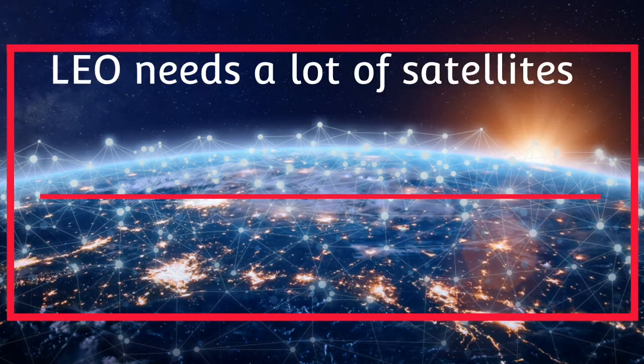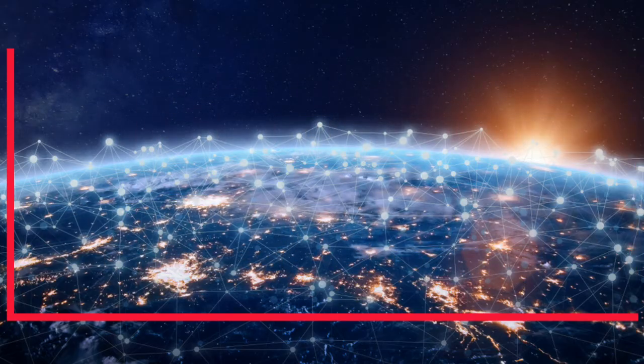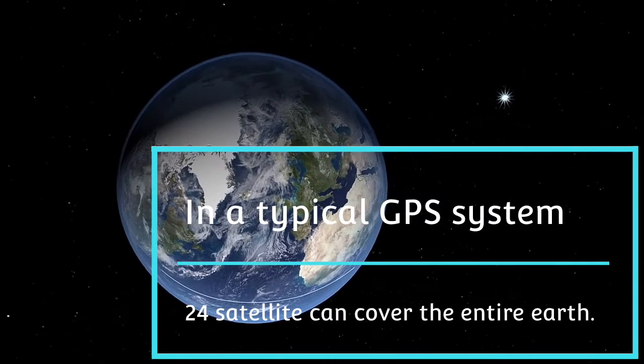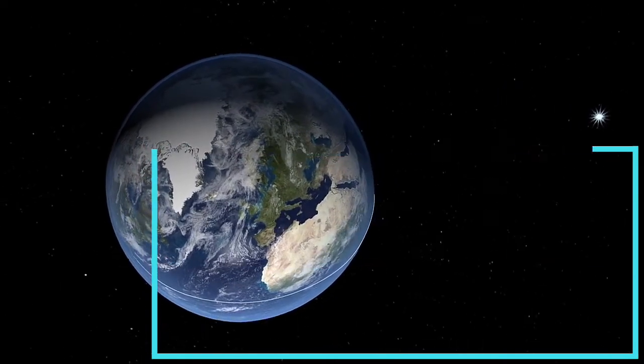Moreover, LEO needs a lot of satellites to cover the entire Earth, thus GPS satellites use MEO. In a typical GPS system, 24 satellites can cover the entire Earth.